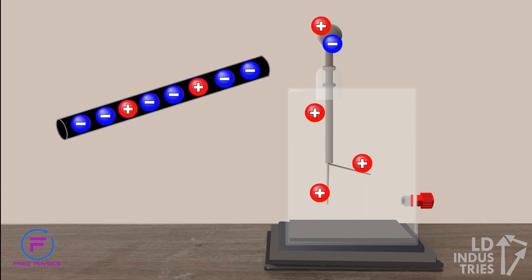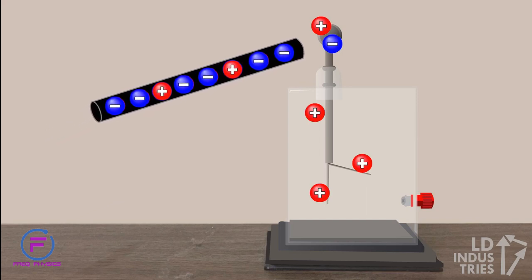A similar process can occur when a negative rod is brought close to but does not touch a positive electroscope. To understand this situation, you need to remember that even a positive object still has some negative charges within it.